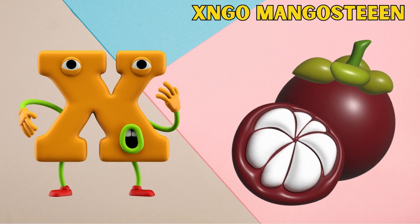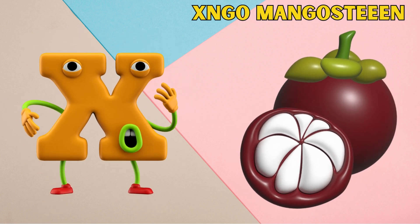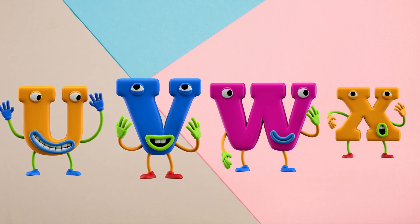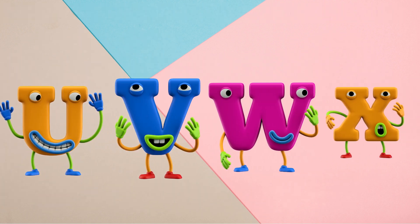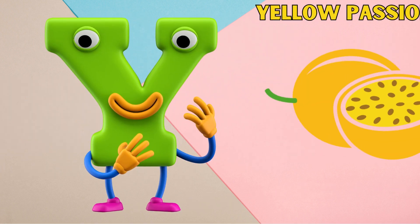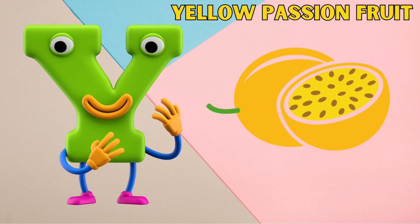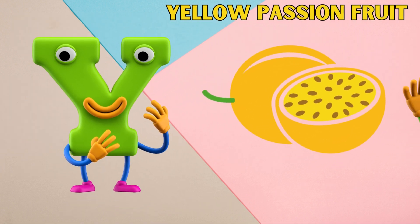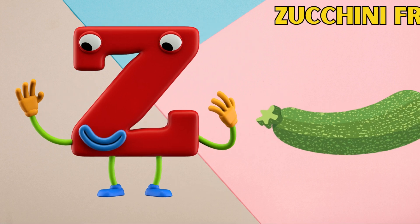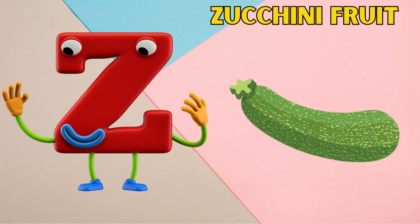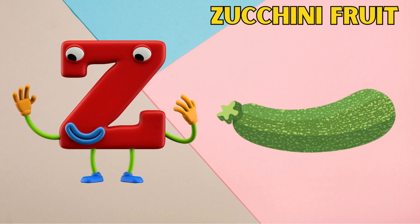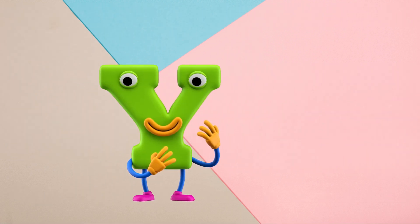X is for xango mangosteen, x-x-xango mangosteen. Y is for yellow passion fruit, y-y-yellow passion fruit. Z is for zucchini fruit, z-z-zucchini fruit.